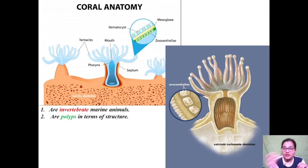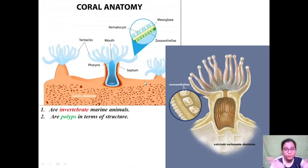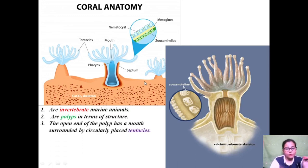What is the structure helping in the formation of the coral? Look at the tentacles. You may have seen an octopus — those arms are called tentacles. With the help of these tentacles it kills its prey and eats food. The structure of the coral is like a polyp — a vase-like structure — and it has tentacles. The tentacles help in catching organisms and provide food to the polyps. Within the tentacles lies an important structure: the open end of the polyp has a mouth surrounded by circularly placed tentacles.